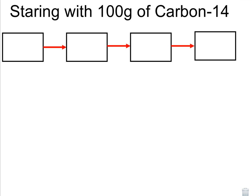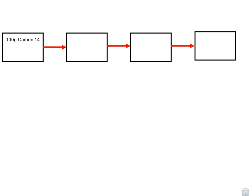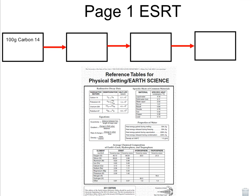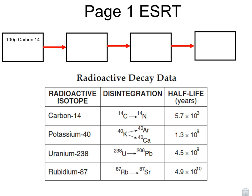So if we take a look at a hundred grams of carbon-14, that's our starting amount. If you take a look at the reference table page one, we can circle that radioactive decay. And if you take a look at carbon-14, highlight it, you can see carbon-14 degrades into nitrogen-14. So carbon-14 is the unstable and then nitrogen-14 is the stable. Every 5.7 times 10 to the third years, which is 5,700 years.